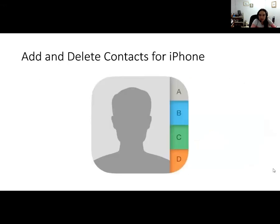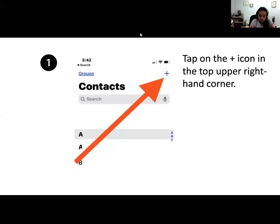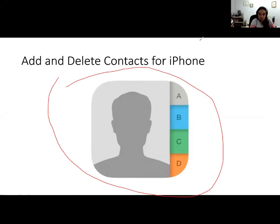Right now we're going to do iPhone, so the Samsung and Android group don't worry — I'm not going to forget about you. We're just going to do it after this part. If you want to follow along with me, go ahead and take out your phone. If you have any questions, you can stop me and ask them. Today's class is basically just doing these steps together, so I encourage everyone to try it on their phones. Go to your contacts app — if you can't find it, use one finger and slide down to search for it.